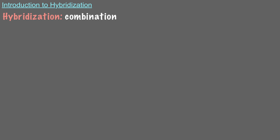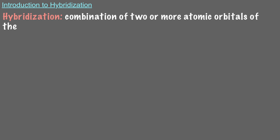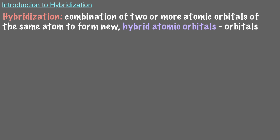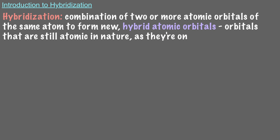In this video, we will learn about hybridized atomic orbitals and how they're formed. We have already learned about atomic and molecular orbitals, but sometimes atomic orbitals need to experience a change before turning into molecular orbitals. Hybridization is the combination of two or more atomic orbitals of the same atom to form new hybrid atomic orbitals — orbitals that are still atomic in nature, as they're on a single atom, but with new shapes.